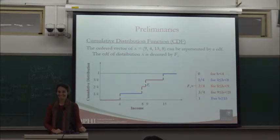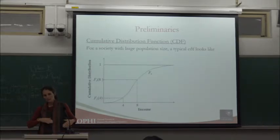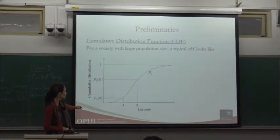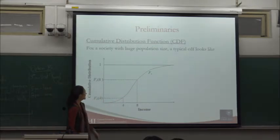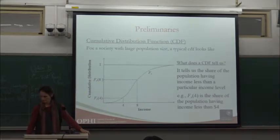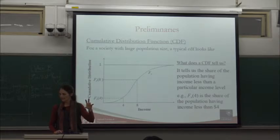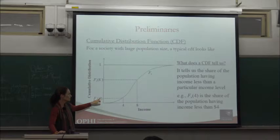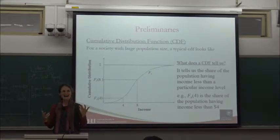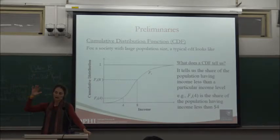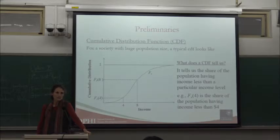This is hopefully a review. When we have a large population, the CDF will usually be an S-shaped curve against which we can set different poverty lines. What the cumulative distribution function tells us — and this is what's important for poverty — is the share of the population that has an income less than a given poverty line. So f(x=4) is the proportion — the head count ratio — having an income less than 4. That's why we always consider CDFs when fixing different income poverty lines, particularly for dominance comparisons.